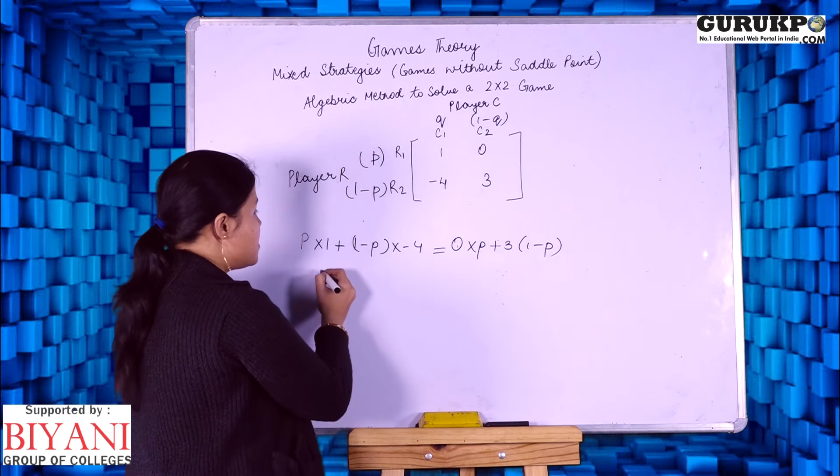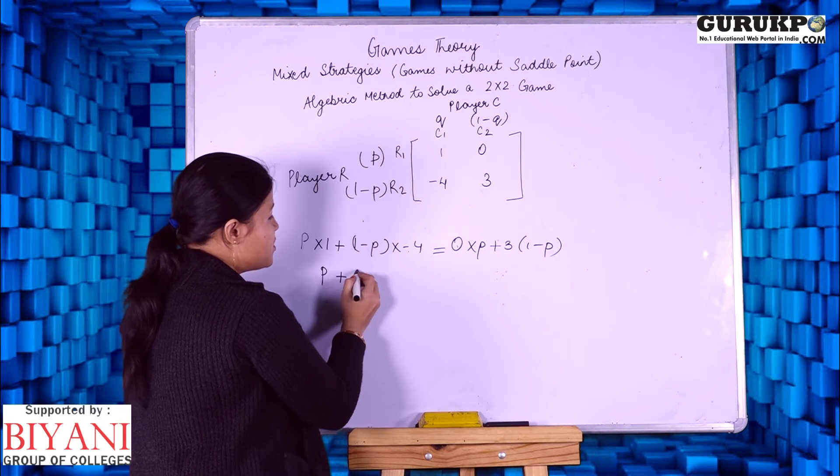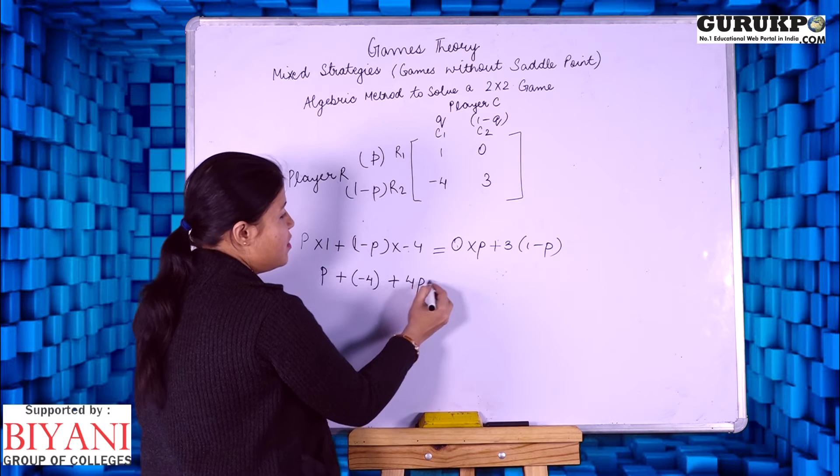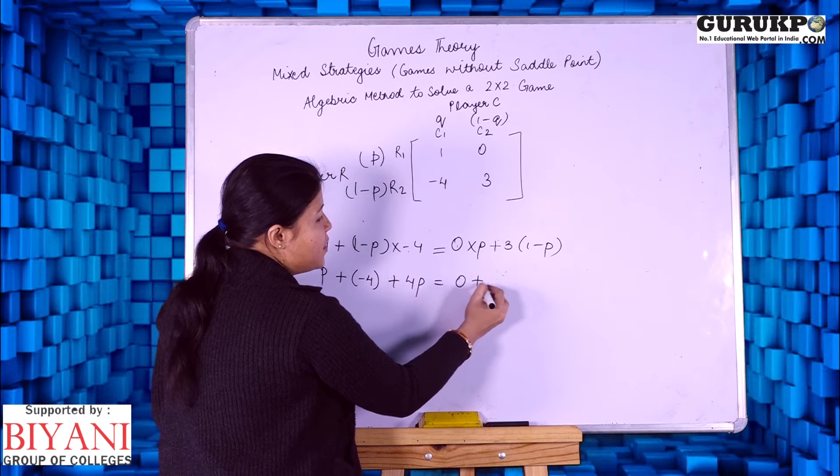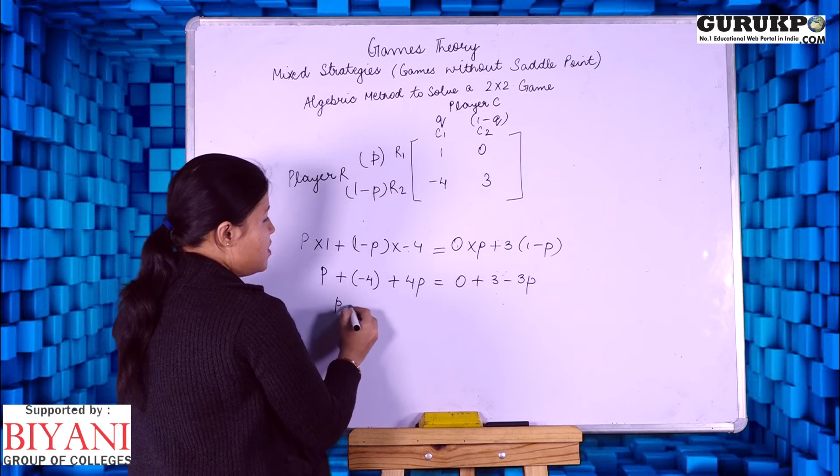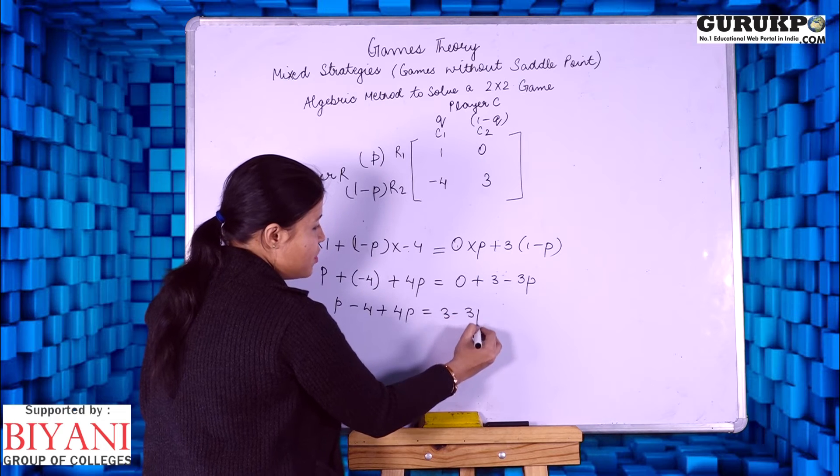We are going to solve this: P plus minus 4 into plus 4P equals to 0 plus 3 minus 3P. This is P minus 4 plus 4P equals to 3 minus 3P.